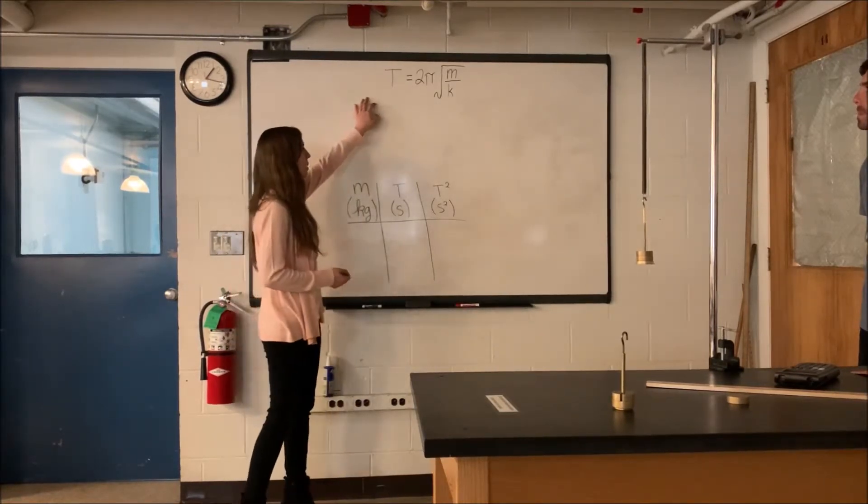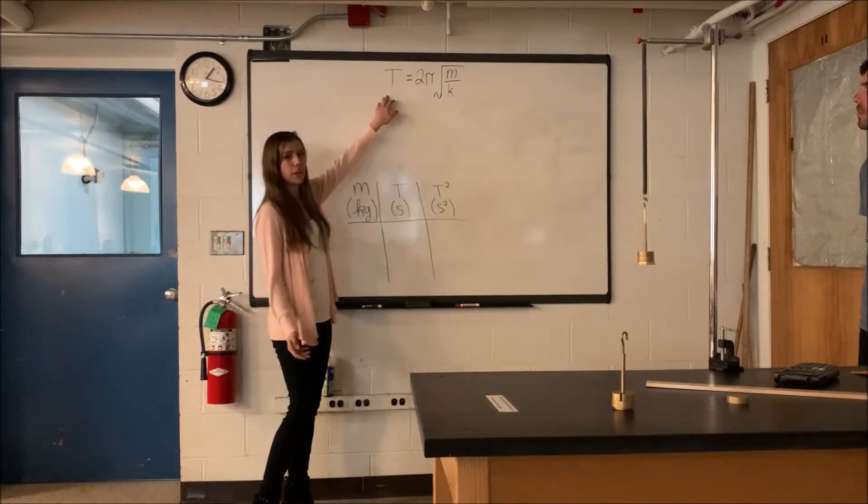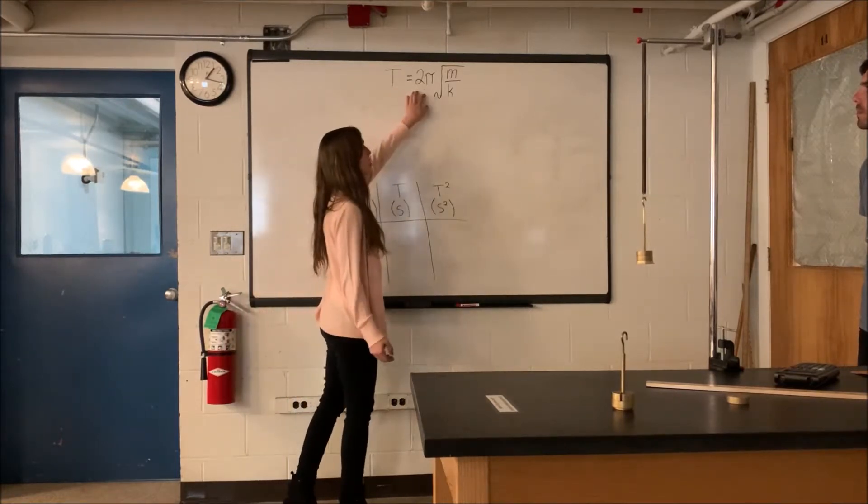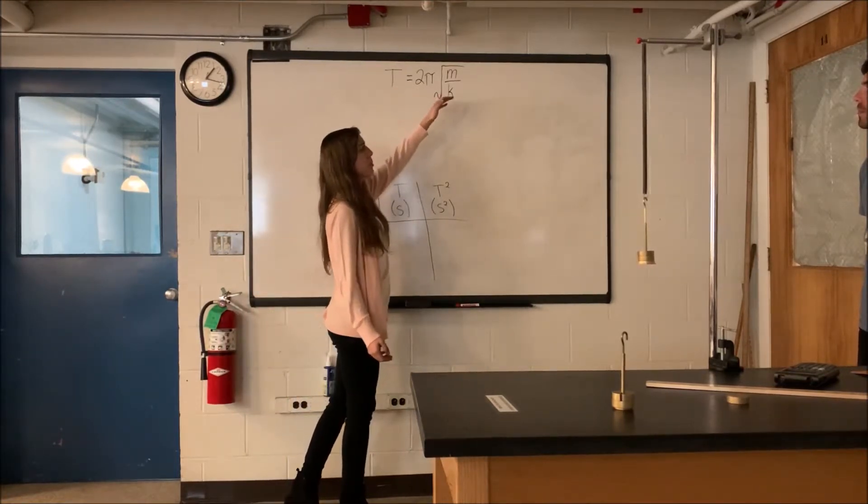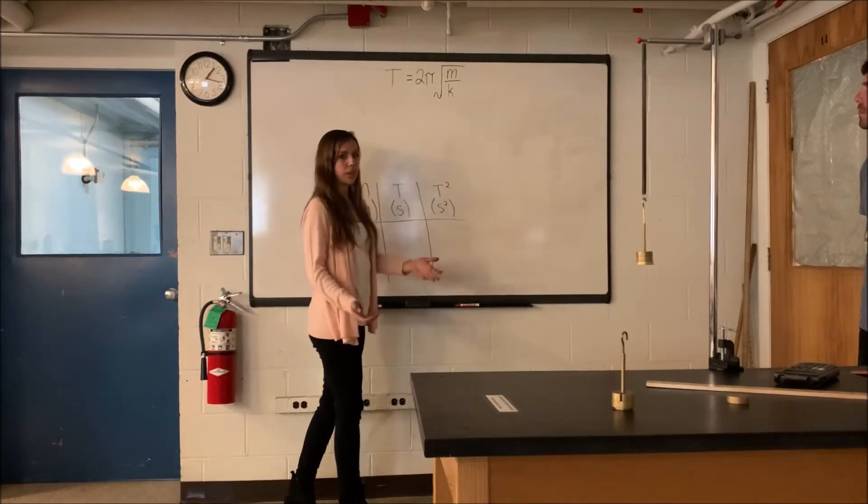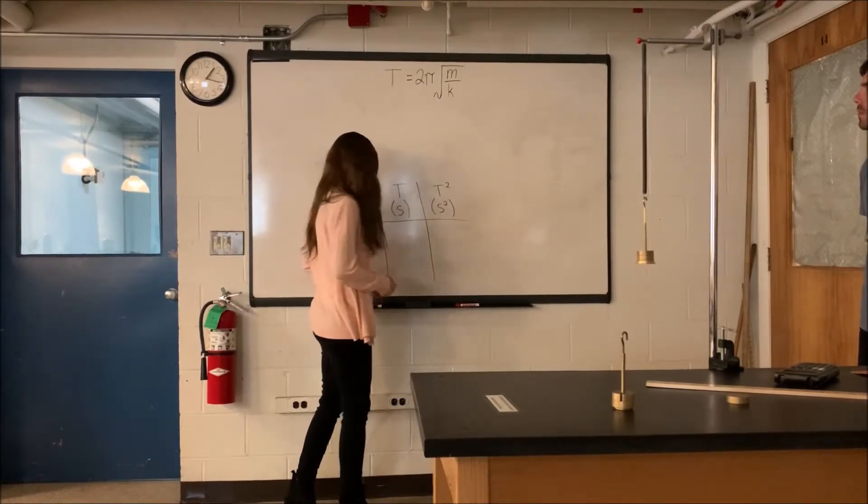This means we can use this equation, which tells us that T, the period of oscillation, is equal to 2π times the square root of m over k, where m is the mass on the end of the spring, and k is the spring constant.